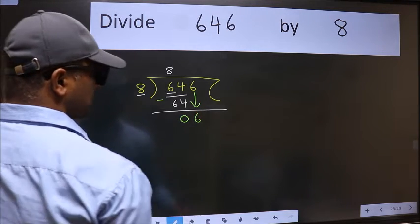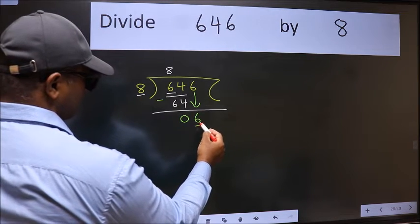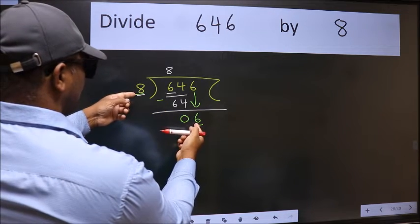After this step, the mistake happens and the mistake is this. Here we have 6 and here 8. 6 is smaller than 8.